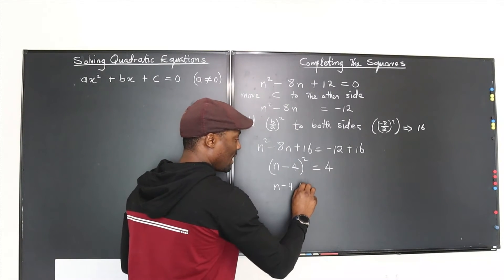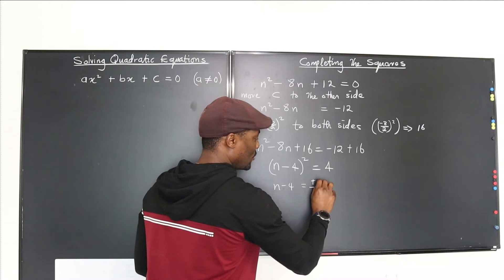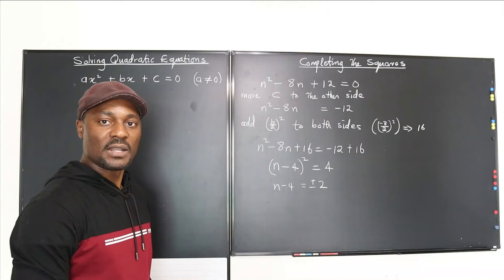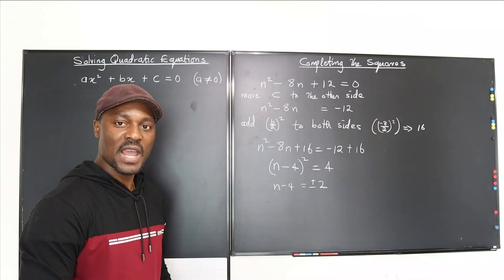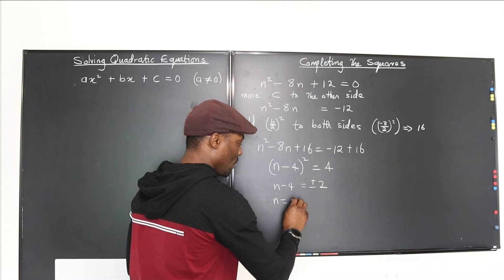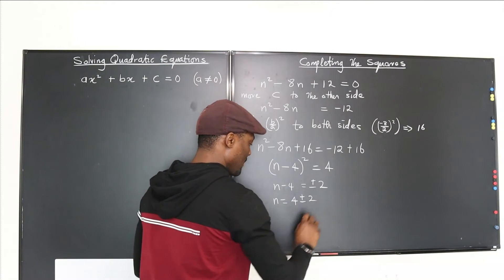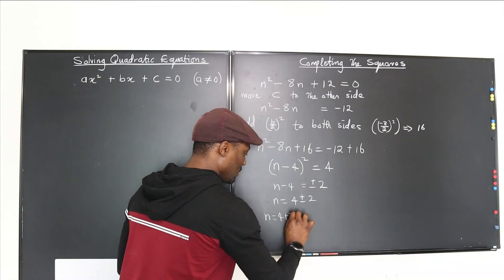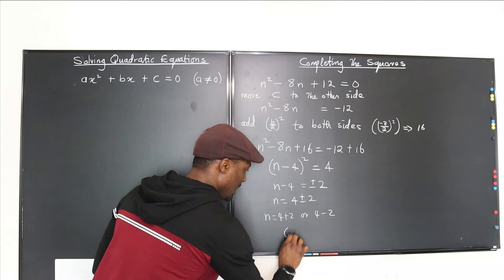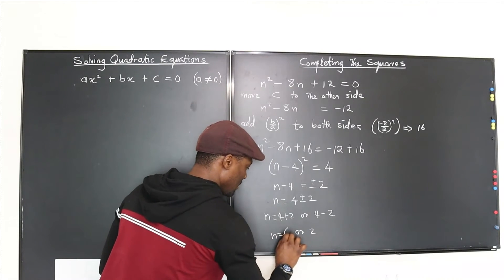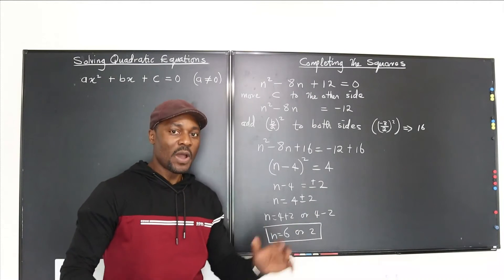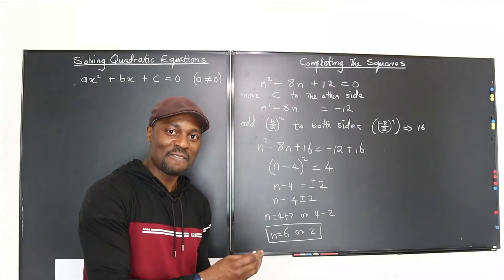Negative 12 plus 16 is 4, so we take the square root of both sides: n minus 4 equals plus or minus 2. Moving 4 over: n equals 4 plus or minus 2. So n equals 6 or n equals 2 — those are the two possible answers, the same as you'd get by factoring.